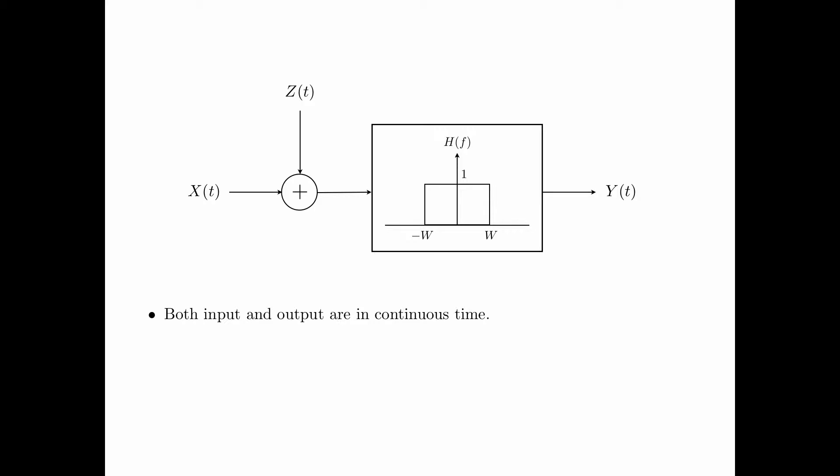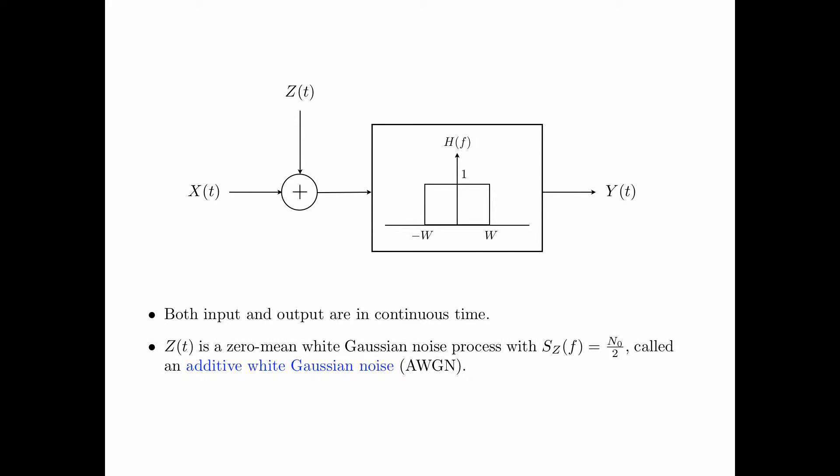In this channel model, both the input and the output are in continuous time. Z of t is a zero mean white Gaussian noise process with the power spectral density, denoted by Sz of f equal to n0 divided by 2, where f is from minus infinity to infinity. This noise process is called an additive white Gaussian noise, or AWGN.